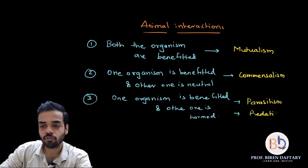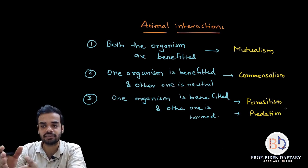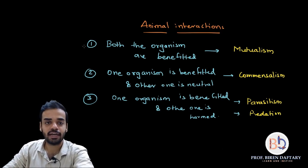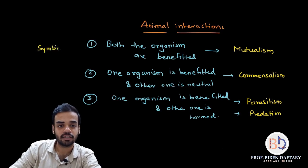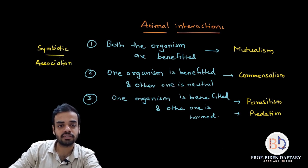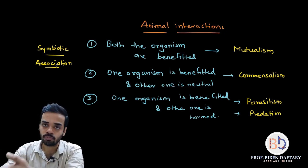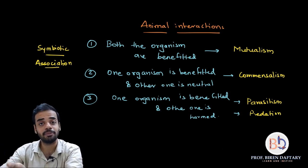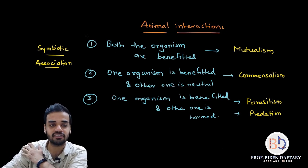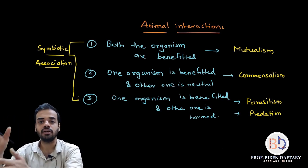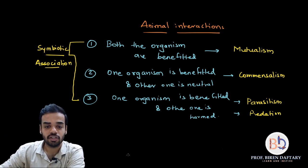So in today's lecture we are going to study mutualism, commensalism, parasitism, and predation. Please remember that all these different types of interactions between two organisms can be called symbiotic associations. Symbiotic associations are the close interactions between any two organisms where both might be benefited, one might be benefited and the other neutral, or one might be benefited and the other harmed.